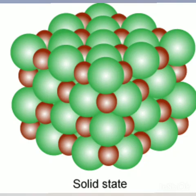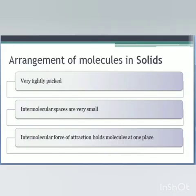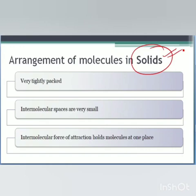Hello students, let us begin with today's topic. Today we are going to discuss about the arrangement of atoms or molecules in a solid. The solids we are talking about may range from television, furniture, or anything you see around yourself. The first property of solids is that the number of atoms or molecules present in a solid are packed very tightly.